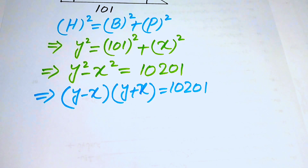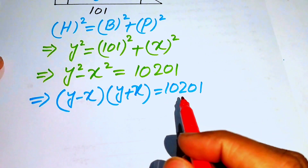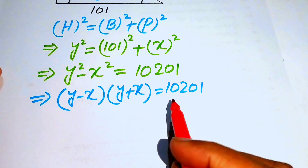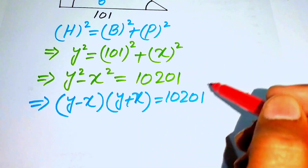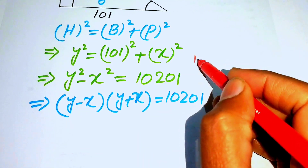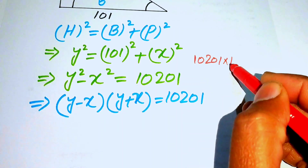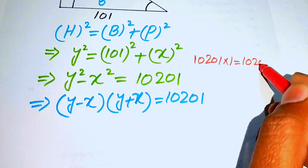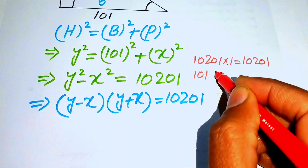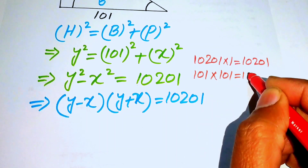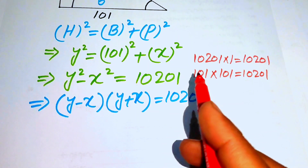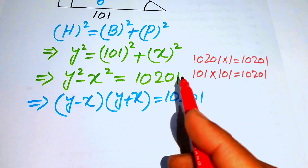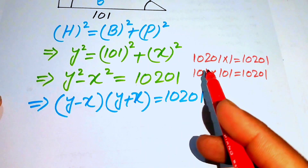The left-hand side has two factors multiplied together, so we find the factor pairs of 10201. The possible factor pairs are: 10201 × 1 = 10201, and 101 × 101 = 10201. We exclude negative values since side lengths of a triangle cannot be negative.